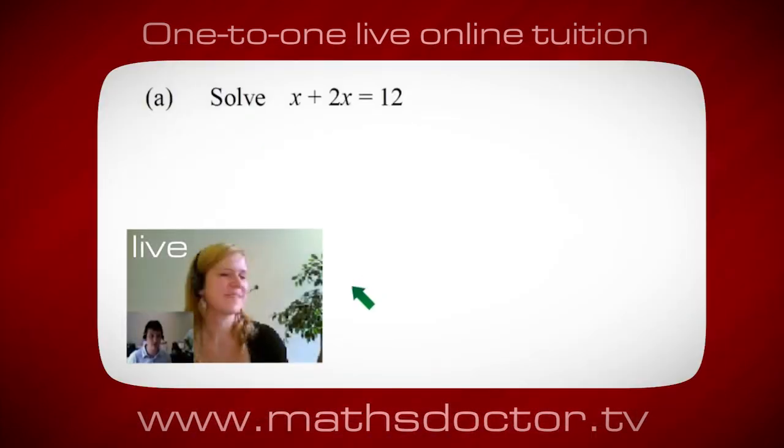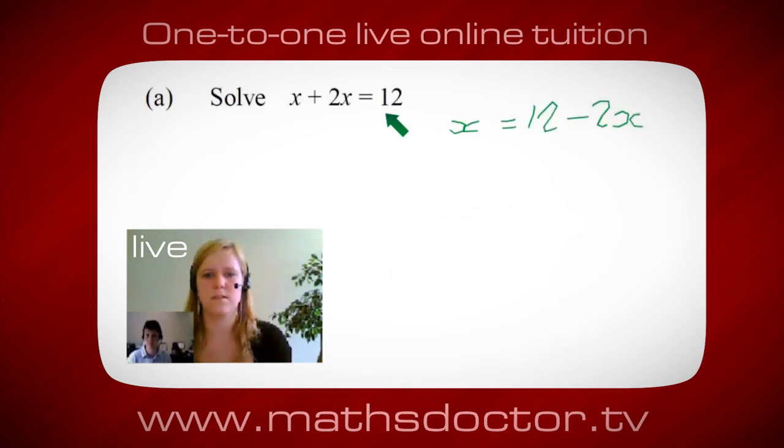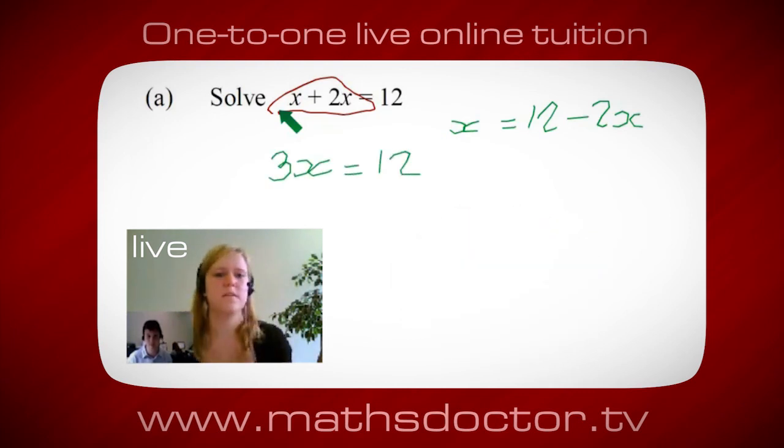Okay, so let's look at this one. Solve x + 2x = 12. So what do you think you do first? Okay, well I want x on its own, so I would put x = 12 - 2x. Okay, so a lot of the time we want to get x by itself, but what we want to do first is get all of these x's together. So can you see anything we can do with this to get all these together in one place? Okay, it's 3x, isn't it? Yeah, absolutely. 3x = 12. And so x = 4. Brilliant, spot on, well done.